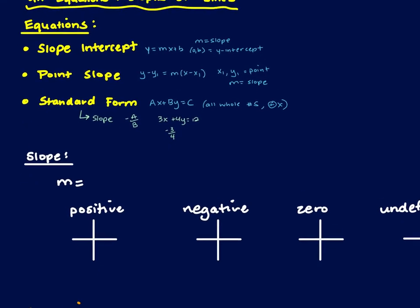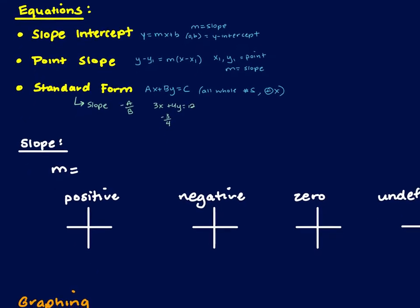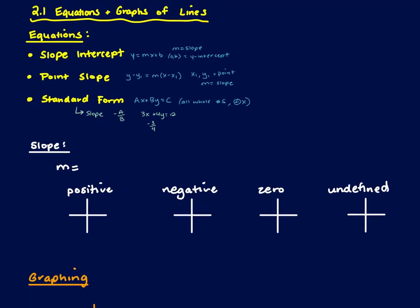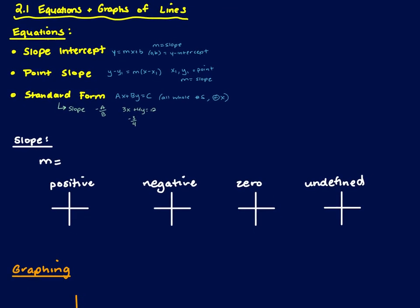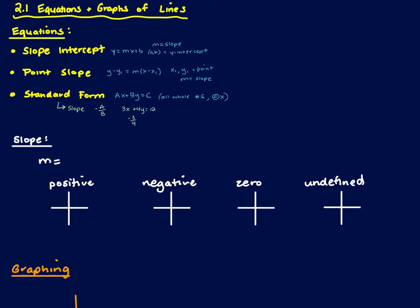For the slope of our lines, there are four different kinds. Positive, which is increasing as I move from left to right. Negative, which is decreasing as I move from left to right. Zero, which happens in a horizontal line. And undefined, which happens in a vertical line.